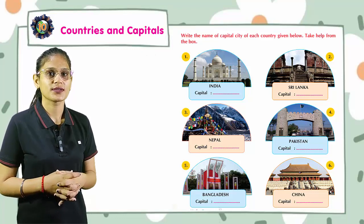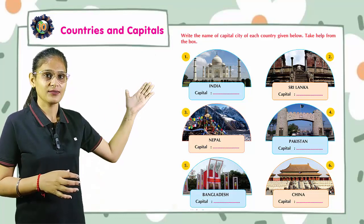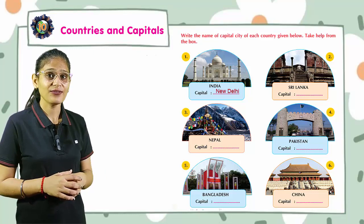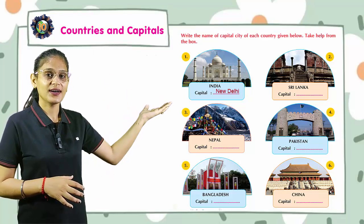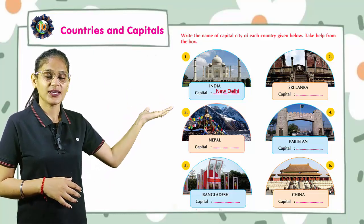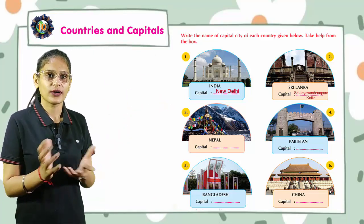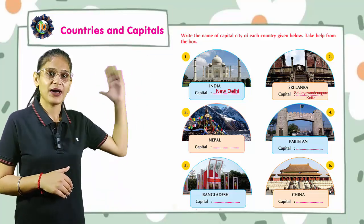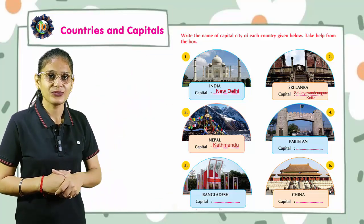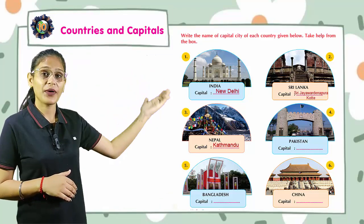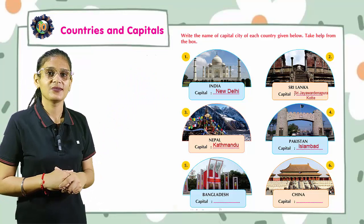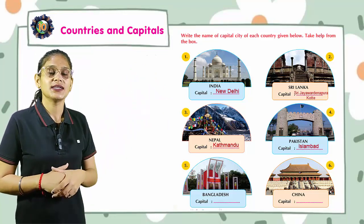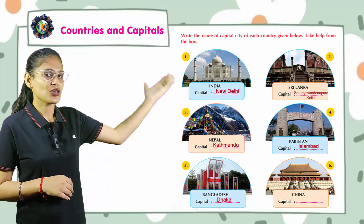Take help from the box. India — New Delhi. Sri Lanka — Sri Jayawardenepura Kotte. Nepal — Kathmandu. Pakistan — Islamabad. Bangladesh — Dhaka.